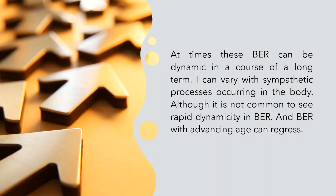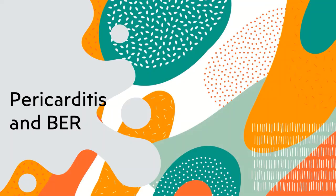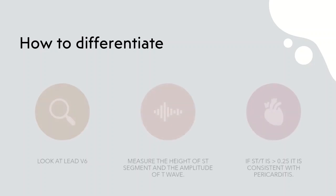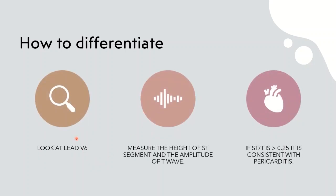So when you talk about benign early repolarization, how do we differentiate? Basically look at lead V6, the precordial lead. Look at lead V6. Measure the height of the ST segment and the amplitude of the T wave. The height of the ST segment and the height of the amplitude of the T wave.